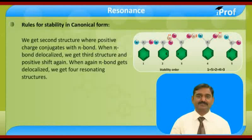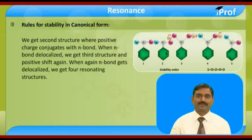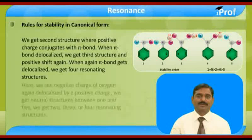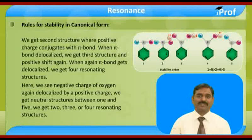We get the second structure, where the positive charge coincides with the pi bond. When the pi bond delocalizes, we get the third structure and the positive charge again shifts. When the pi bond delocalizes further, we get the fourth resonating structure. Here, the negative charge of oxygen is again delocalized by the positive charge and we get a neutral fifth structure.